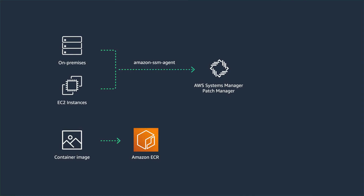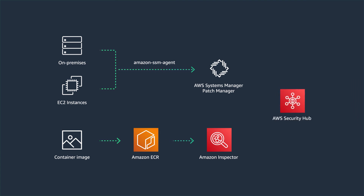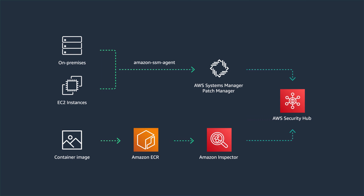Teams could also configure scanning of images either on push or continually, but the security team wanted a single pane of glass view of the security posture of the entire IT environment. This is where Amazon Inspector and AWS Security Hub came in. ECR forwards all findings to Inspector, which is an automated vulnerability management service. AWS Security Hub natively integrates with AWS services like Patch Manager and Amazon Inspector, and supports cross-account and cross-region aggregation. Once all findings are consolidated in Security Hub, the security team could build insights, alerts, and even trigger auto-remediation actions using the custom actions feature of Security Hub.